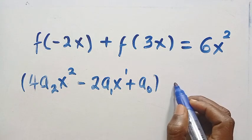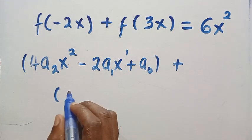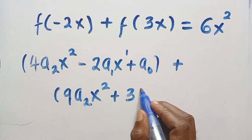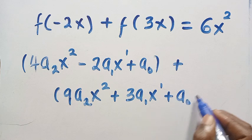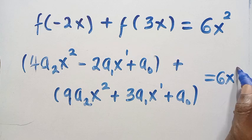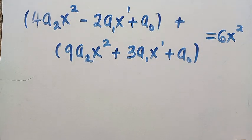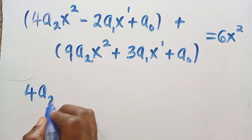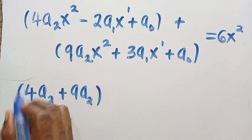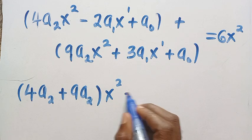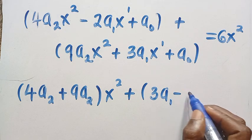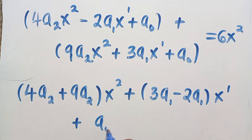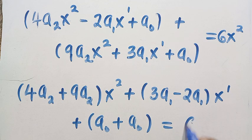We are going to add both expressions together and equate everything to 6x squared. So f of minus 2x plus f of 3x gives us: (4a₂x² minus 2a₁x plus a₀) plus (9a₂x² plus 3a₁x plus a₀) equals 6x squared.